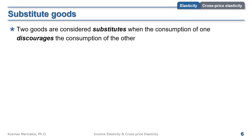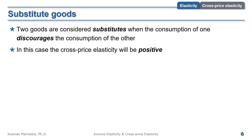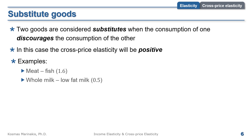Two goods are substitutes when the consumption of one discourages the consumption of the other; in this case, cross-price elasticity is positive. The cross-price elasticity of meat and fish is 1.6, because you order either one or the other. Whole milk and low-fat milk is 0.5. Clothing and entertainment is 0.6, which can show that in today's society, shopping is itself a form of entertainment — sometimes we buy clothes we almost never wear just for the sake of buying. Companies know this and try to make the shopping experience as satisfying as possible.